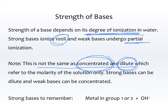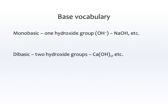You have to memorize the strong bases. Any metal in group one or two with OH- is a strong base — for example NaOH, KOH, Ca(OH)2, or Mg(OH)2. The College Board expects you to know strong bases off the top of your head. Base vocabulary: monobasic means one hydroxide group, like NaOH; dibasic means two hydroxide groups, like Ca(OH)2.